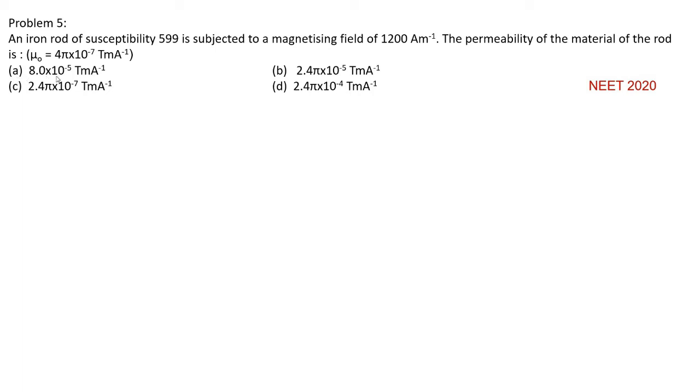Option A, 8.0 into 10 to the power of minus 5 tesla meter per ampere. Option B, 2.4 pi into 10 to the power of minus 5 tesla meter per ampere.